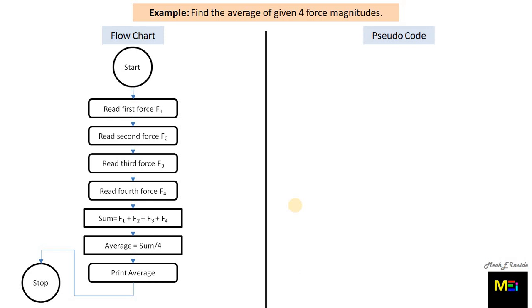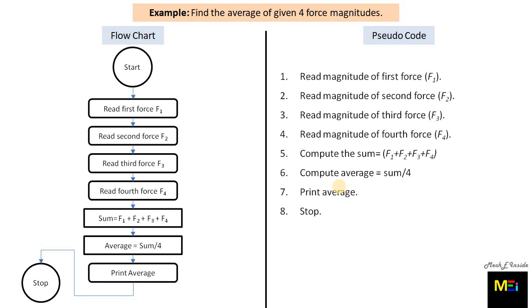For the same problem, we are also showing the pseudocode representation. The steps are: read magnitude of first force, read magnitude of second force, read magnitude of third force, read magnitude of fourth force, compute the sum F1 plus F2 plus F3 plus F4, compute average, then print average, then stop. As we just wrote the sequence of steps, we recall the definition of programming.